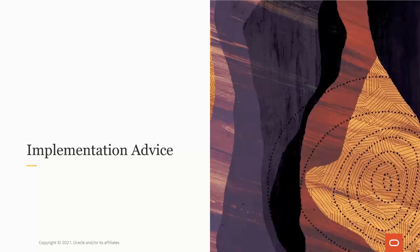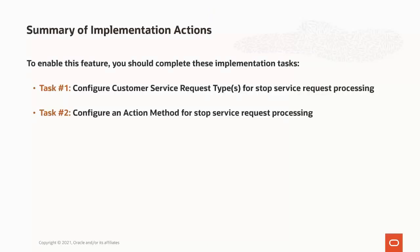In this implementation advice section, we will go through what you need to consider to enable the stop service request process flow capability in your business. There are two main tasks you should complete to enable the new capability. First, you must configure one or more customer service request types for stop service request processing. These contain the business controls, configuration options, and extension points to support various business requirements, and process flows and back-end customer service requests use these for processing stop service requests. Next, you must configure an action method for stop service request processing. When initiating a stop service request, the solution initially creates a process flow and stop service customer service request for back-end processing. The process flow type and customer service request type for these are derived from the action method. For further information on these tasks, please see the Implementing Stop Service Request Process Flow video.